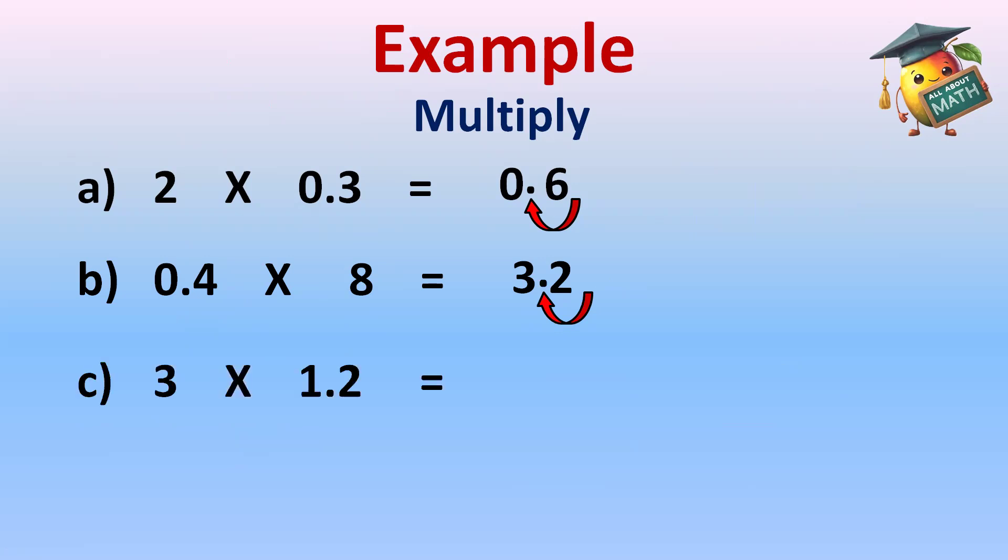Part c: 3 multiply 1.2. Remove the decimal. 3 twelves are 36. Now in question, only one decimal place. So in answer, decimal will come after one digit. So it will come here: 3.6.